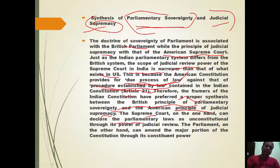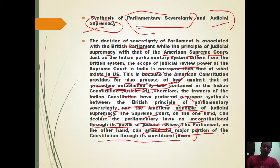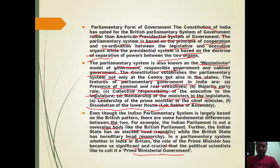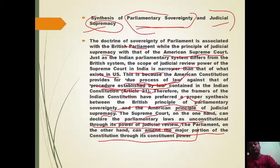The Supreme Court can declare parliamentary laws as unconstitutional through its power of judicial review. Parliament, on the other hand, can amend the major portion of the Constitution through its constituent power. If the judiciary declares a law unconstitutional, Parliament can amend the Constitution through its majority in Lok Sabha and Rajya Sabha.